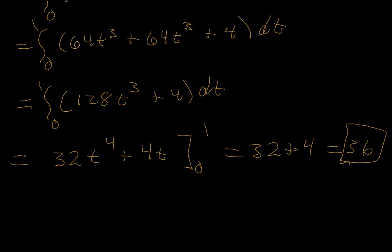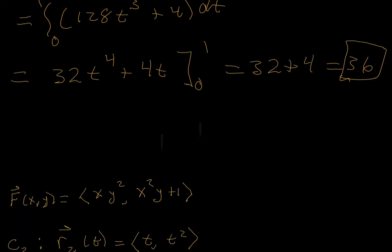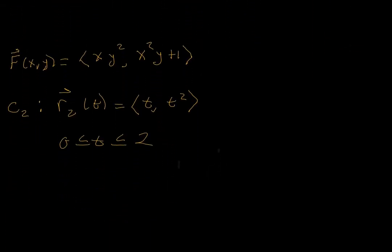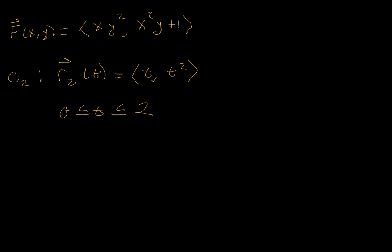Now let's go and investigate what happens at the second path. We need a velocity vector. The derivative of r is going to be <1, 2t>.